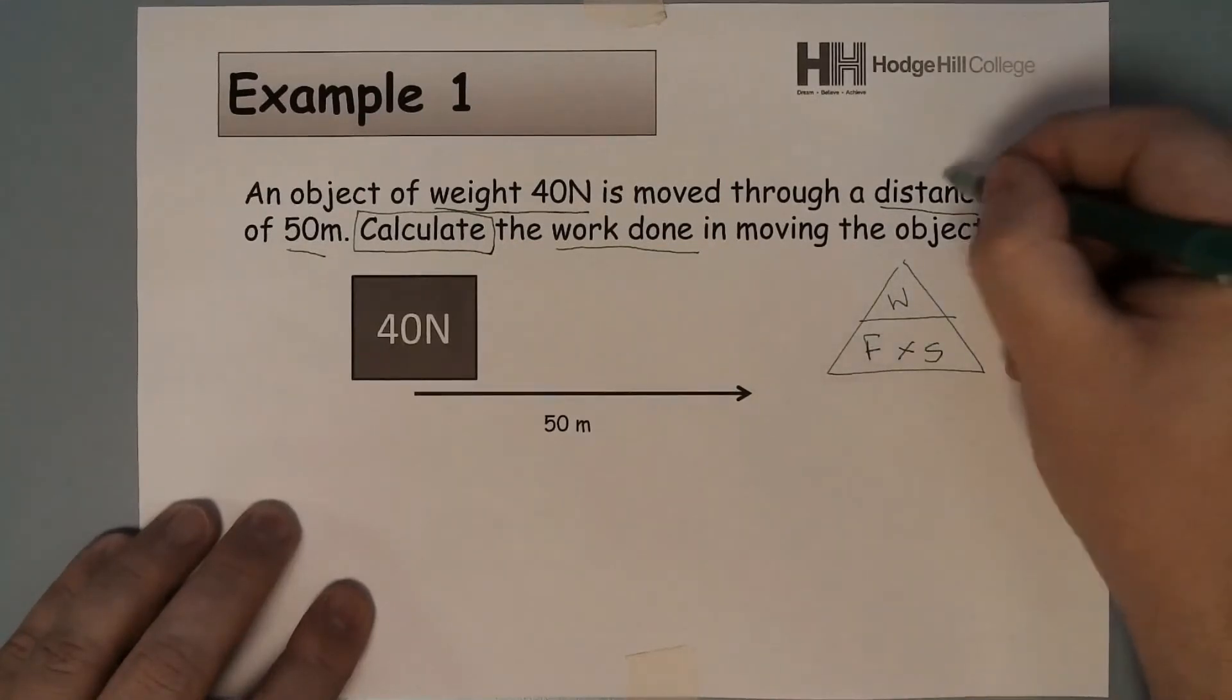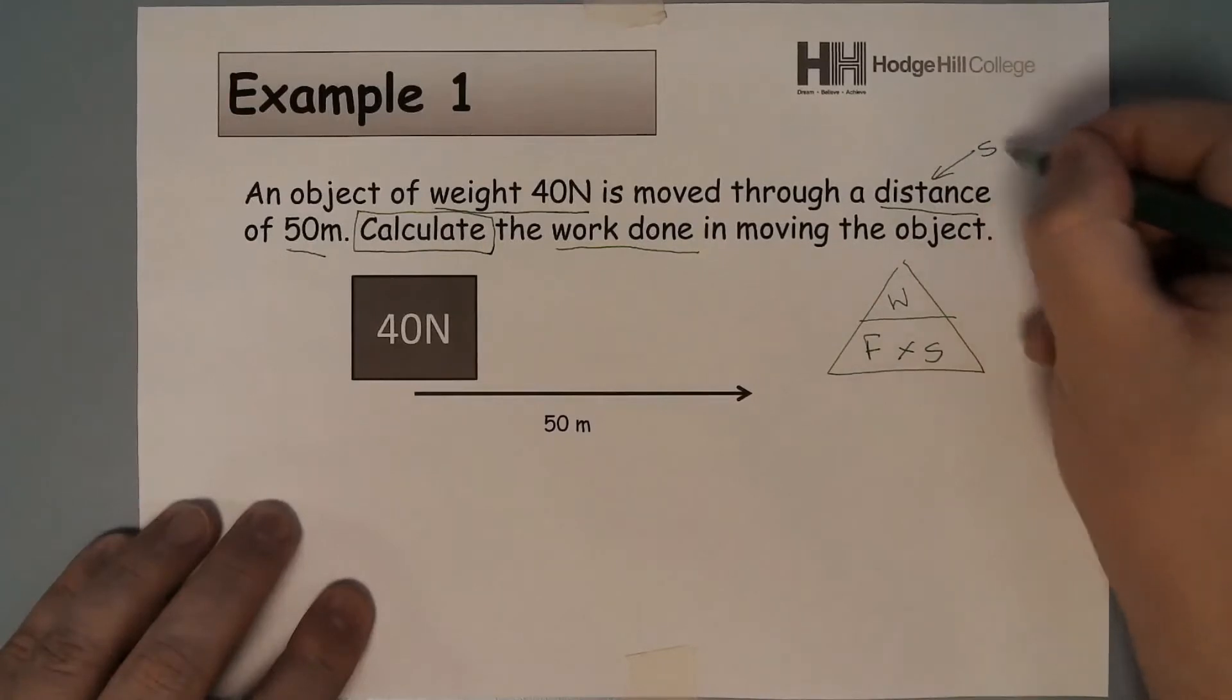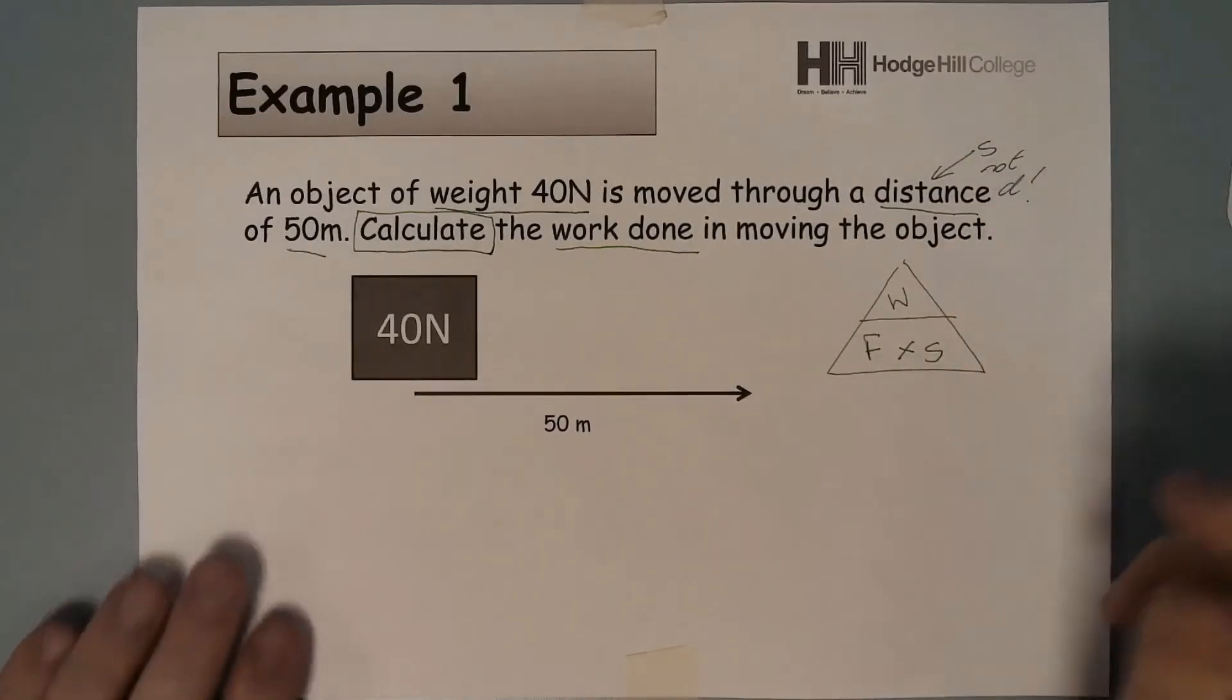So the two numbers at the bottom will be times together. I remember that the distance is given by the letter S, not the letter D. I have to try and remember that.